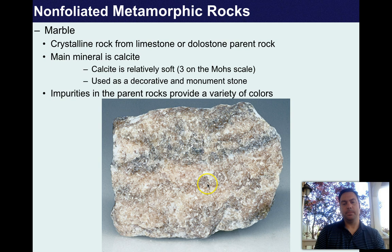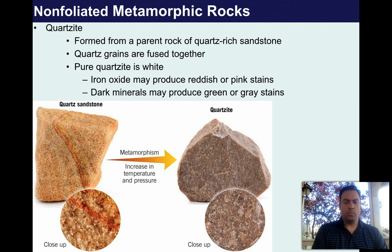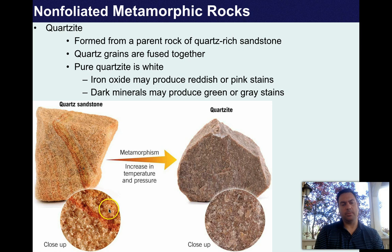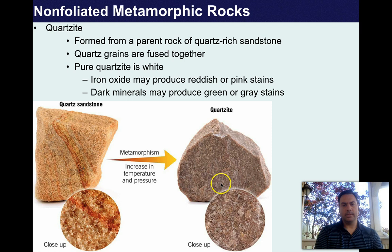Quartzite formed from a parent rock of quartz-rich sandstone — quartz grains are fused together. As pressure and heat are applied, pore spaces close up and minerals fuse together with preferred orientation. Iron oxide may produce reddish or pink stains — here's an iron oxide vein — and dark minerals may produce green or gray stains. You can see little zones of dark green in some areas.